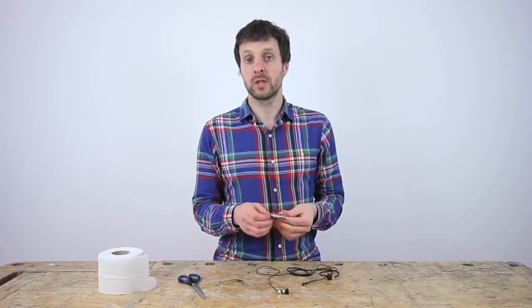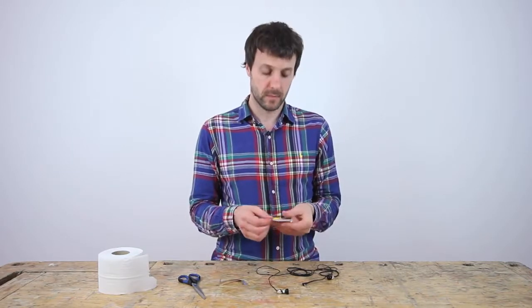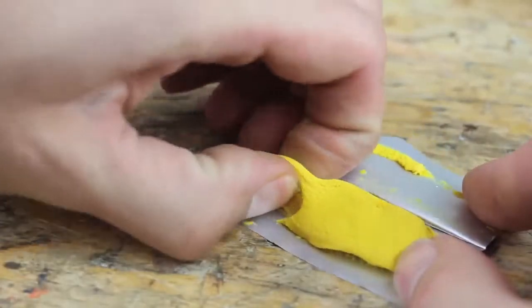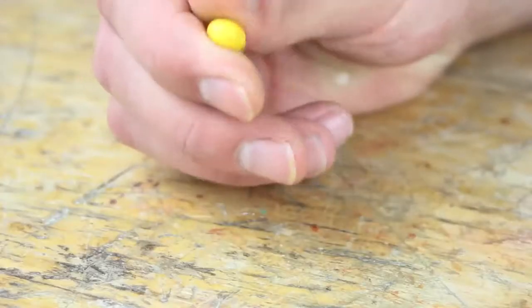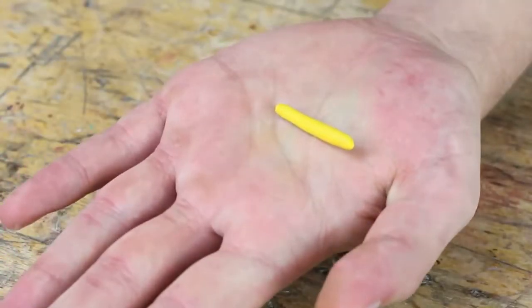For this project, you will use a very small amount of material, about a pea-sized piece per earbud. Tear off a small piece of Suguru and roll it between your thumb and index finger, creating a sausage long enough to wrap around the earbud.